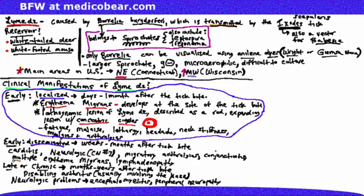and also some neurologic problems like encephalomyelitis and peripheral neuropathies. So we broke the manifestations of Lyme disease into different stages. The early localized, the early disseminated, and also the later stages.